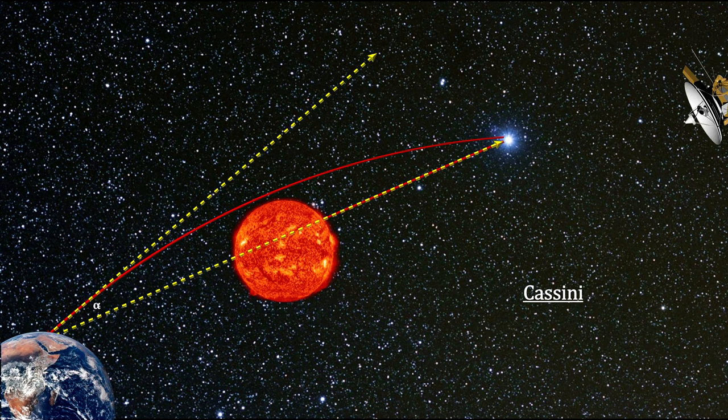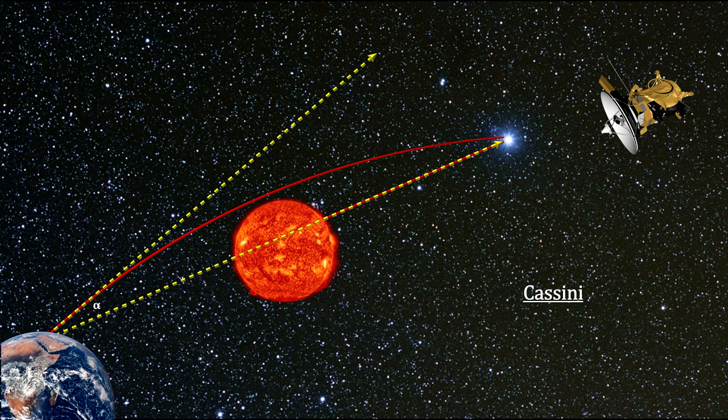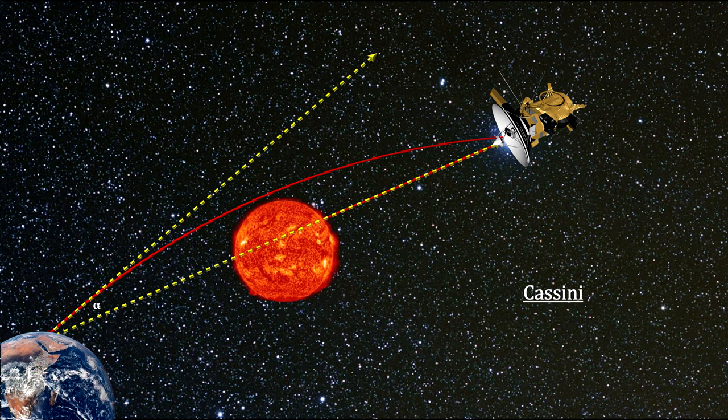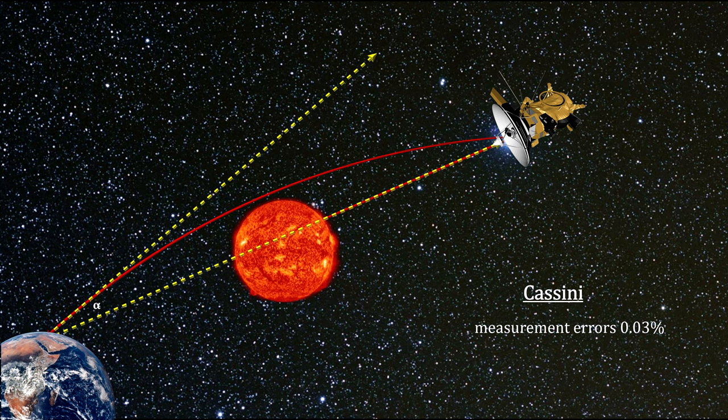In 2003, using radio frequency light and measuring techniques that eliminated the error-producing impact of the Sun's corona, astronomers measured how much waves sent from the Earth to the Cassini satellite and back again were deflected by the Sun. Their error rates were around 0.03%.